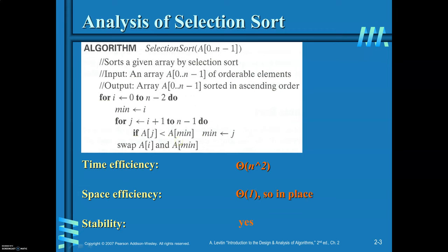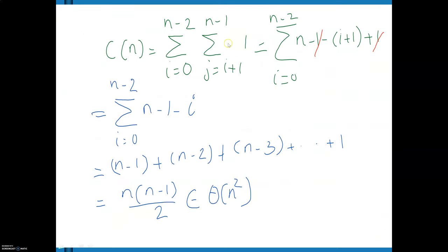The comparison is the basic operation performed in this algorithm. The outer loop i is varied from 0 to n minus 2 and the inner loop is varied from i plus 1 to n minus 1. The inner summation gives n minus i plus 1 minus 1, that is upper limit minus lower limit plus 1. Once you simplify, the final answer is n(n minus 1) divided by 2, which belongs to theta of n squared.